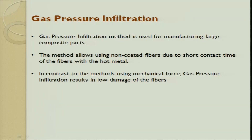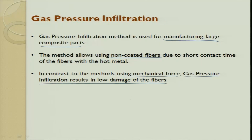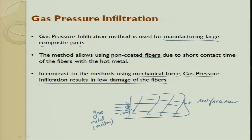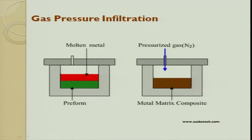Gas pressure infiltration is used for making very large composite parts made out of metal matrix composites. The method allows using non-coated fibers due to the short contact time of the fiber with the hot metal. In contrast to methods using mechanical force, gas pressure infiltration results in lower damage to the preform. Essentially, you have a reinforcement preform, and you push a molten metal into it using gas pressure — the preform does not get damaged, the metal gets reinforced, and you get the output.